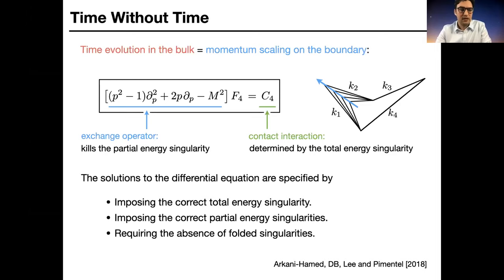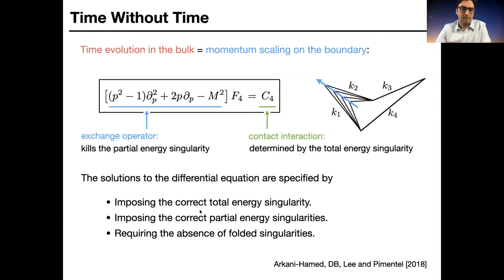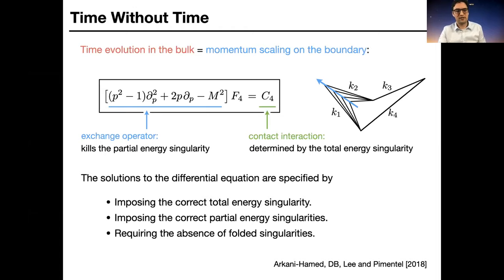To specify solutions to this equation, we need three things: first, specify the correct total energy singularity, equivalent to specifying the contact source on the right-hand side — classifying all possible four-point contact interactions or amplitudes. Second, impose correct partial energy singularities as a boundary condition. Third, require no folded singularities, which is the second boundary condition. Since the differential equation is second-order, exactly two boundary conditions are needed: the correlator must approach the right limits when partial energies sum to zero, and must have no folded singularities.